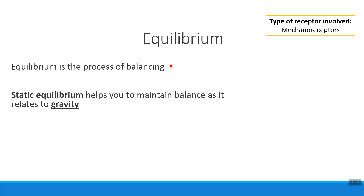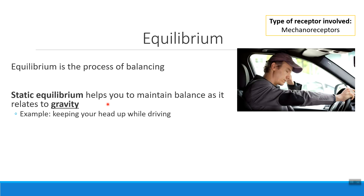The first way it has to stay balanced is relative to gravity, and this is what we call static equilibrium. A good way to think about how you detect static equilibrium is what keeps your head up when you're driving. If you start to nod off your head will jerk itself back up because you were going forward with gravity. Static equilibrium is also what you feel when you're in an elevator and it jolts up or down.